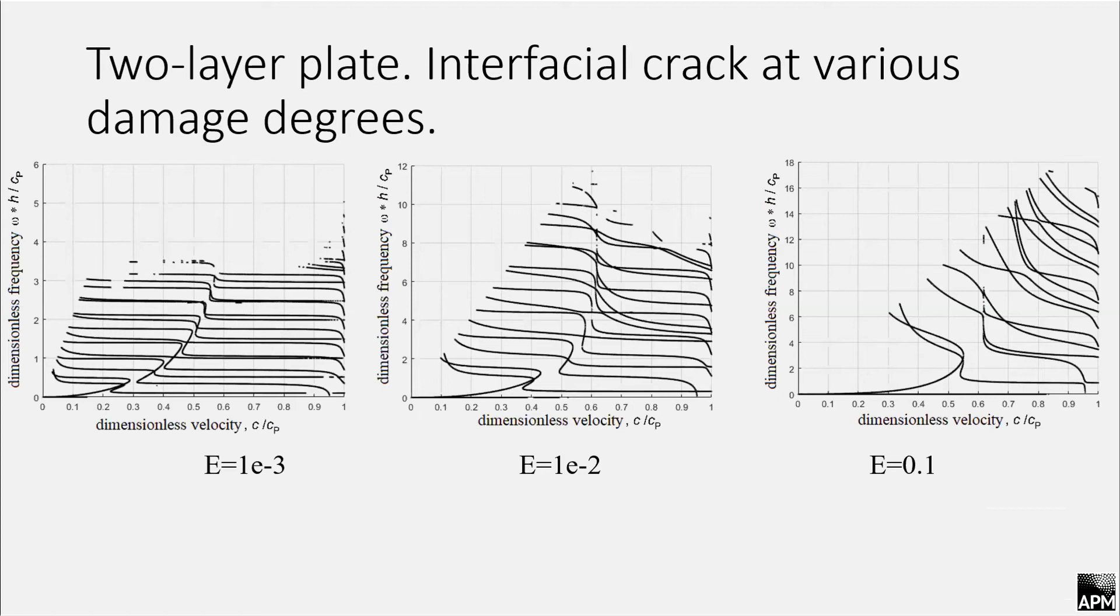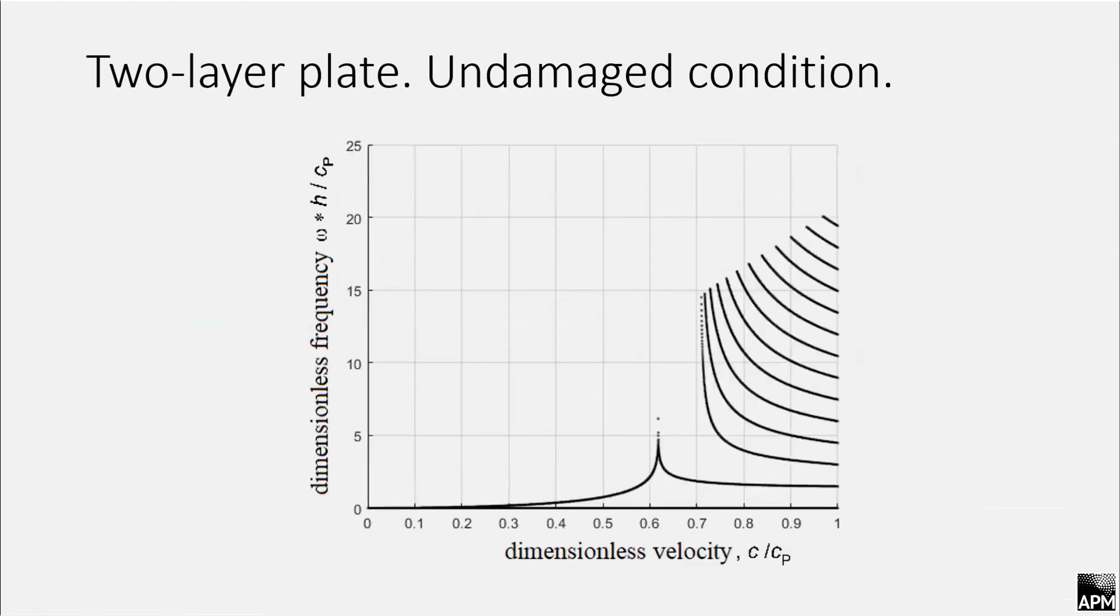By comparing dispersion curves with the theoretical ones, for example, here we can see how it changes at Young's modulus equals 0.1. It can be considered as almost similar to its initial state.